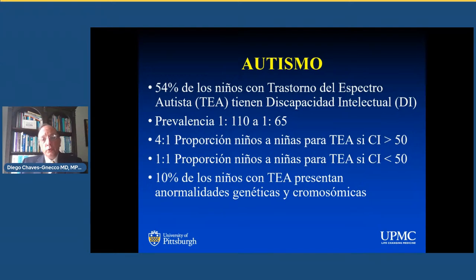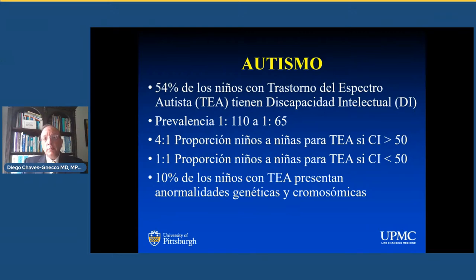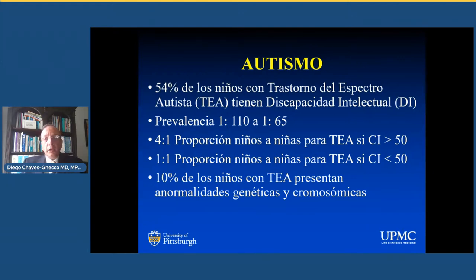Comenzamos con unas cifras básicas. El 54% de los niños con trastorno del espectro autista tienen una discapacidad intelectual. Muchos han escuchado que hay una epidemia de autismo, y en muchos casos se ha mal atribuido esta epidemia a factores como las vacunas, lo cual ha sido completamente desmentido. Ha habido estudios que han demostrado que no hay ninguna relación entre las vacunas y el trastorno del espectro autista. Lo que sí ha pasado es que desde que Leo Kanner en Johns Hopkins y Asperger en Europa hicieron las primeras descripciones del autismo en los años 50, los criterios diagnósticos han cambiado, y con cada cambio cambia la incidencia y la prevalencia del diagnóstico.